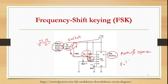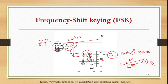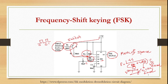The 555 timer generates a frequency of 1.44 divided by (RA + 2×RB) × C. Here RA, RB, and C determine the frequency. Capacitor C is fixed, RB is 47 kilo-ohms and is also fixed, and RA is the varying quantity. RA varies because sometimes only RA is present and sometimes a switch connects an additional resistor in parallel.